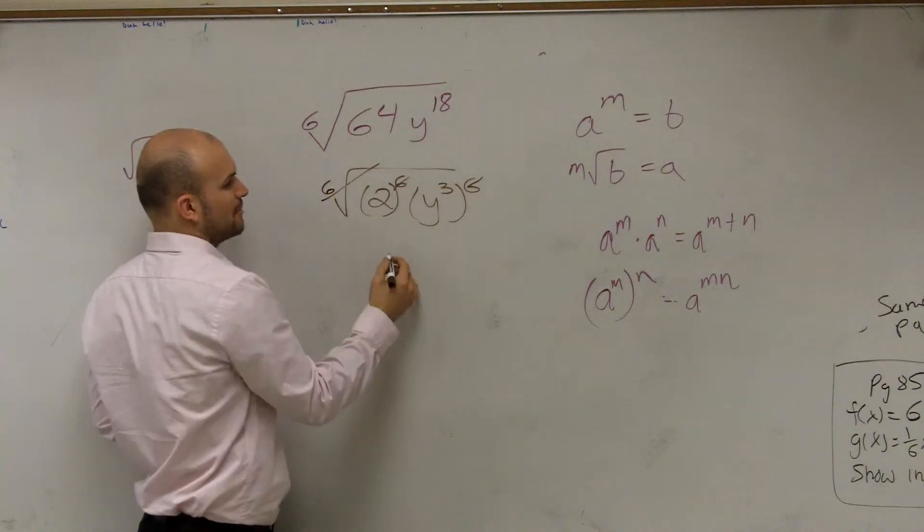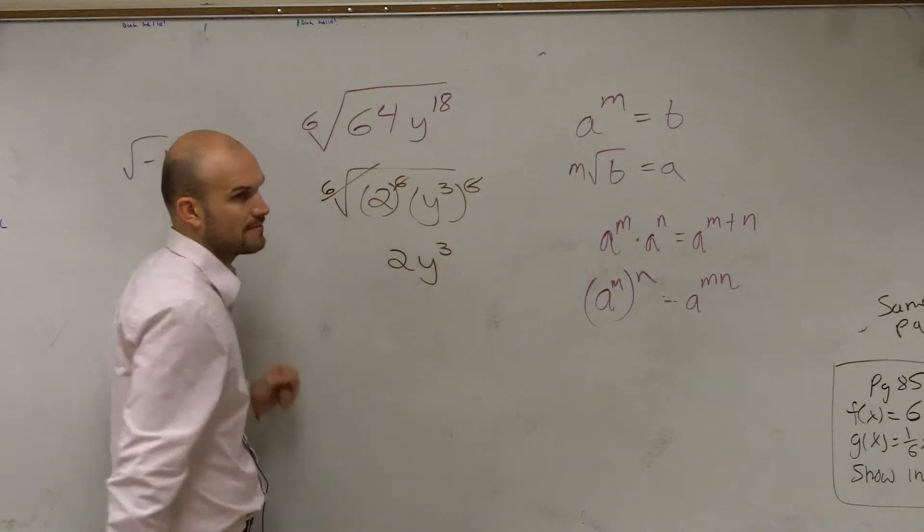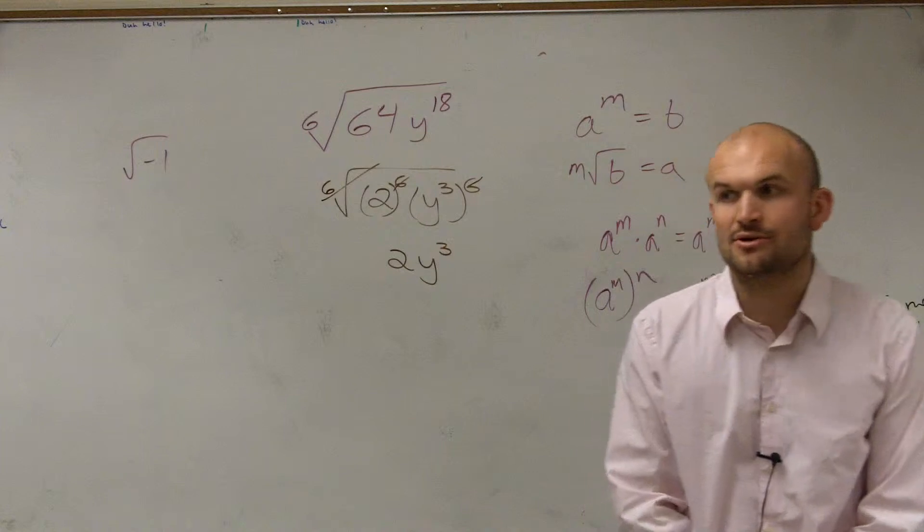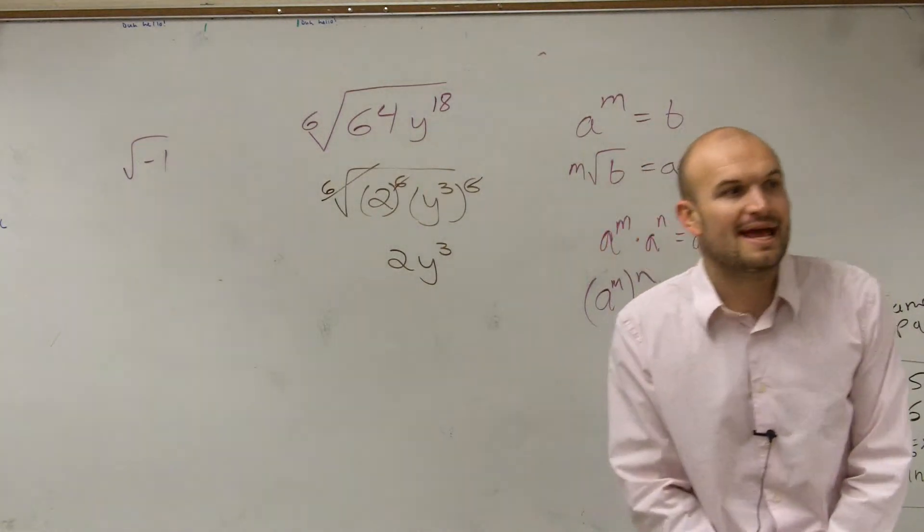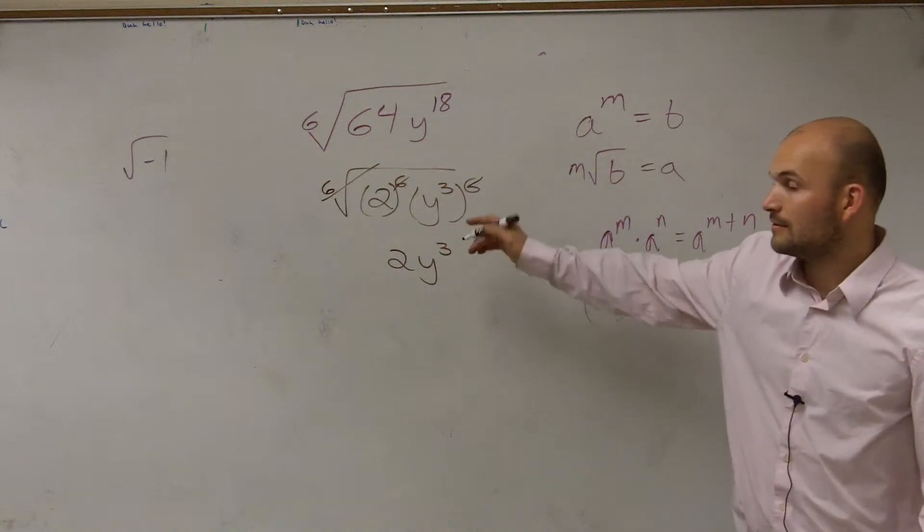So therefore, when I undo the square roots, I'm left with 2y cubed. All right. Now, this thing that's going to come into our play is we said that has to be positive, right?